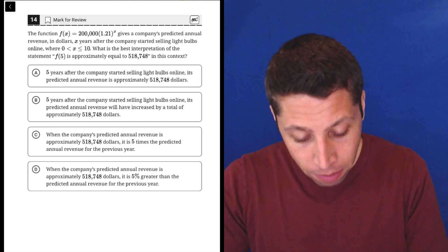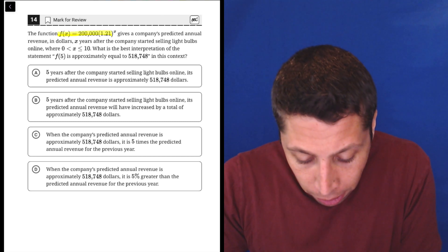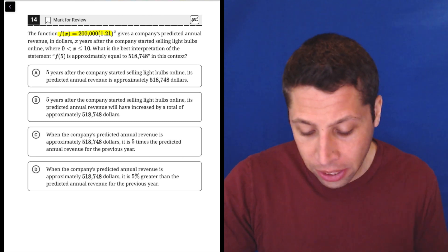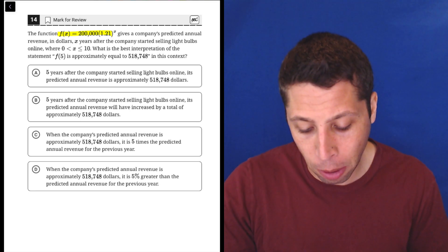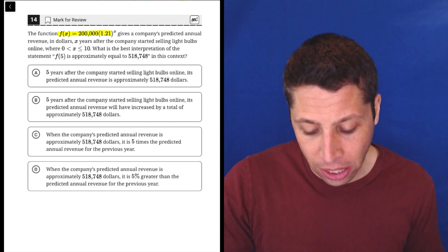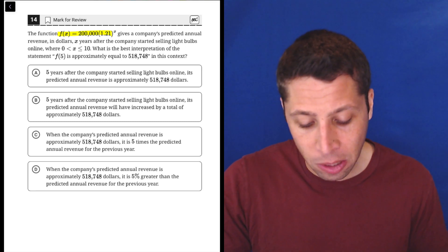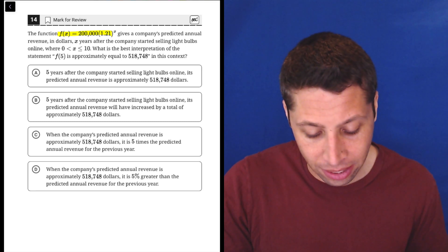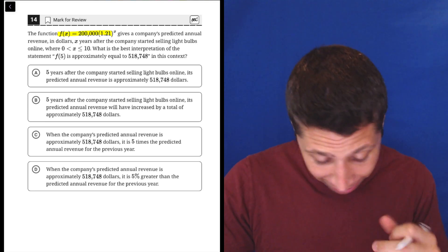We have this equation, very clear. It gives us the company's predicted annual revenue in dollars X years after the company started selling light bulbs online, where zero is less than or equal to X is less than or equal to 10. What's the best interpretation of the statement? F of five is approximately equal to 518,748 in this context.